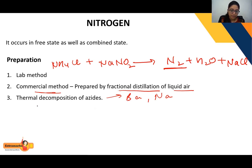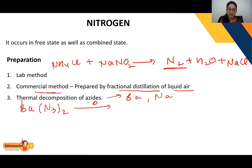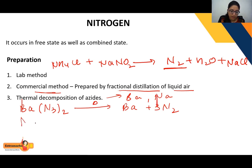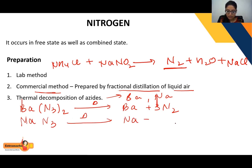On thermal decomposition of barium azide, Ba(N₃)₂, you get Ba plus 3N₂. Similarly, thermal decomposition of sodium azide, NaN₃, gives Na plus N₂. So nitrogen can also be obtained by the thermal decomposition of azides.